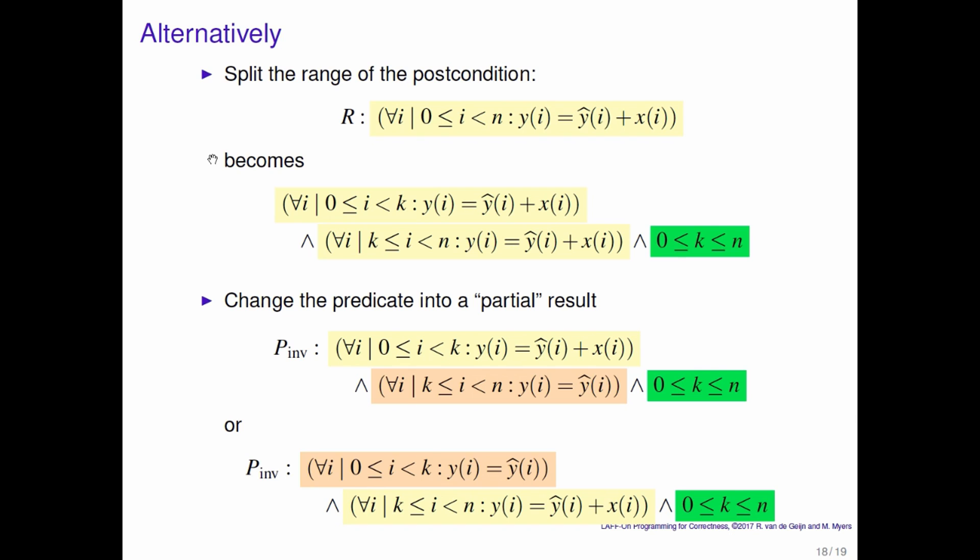So what do we see here? You look at the postcondition, which tells you everything that needs to be computed. You split its range because from experience we know that we tend to march through one-dimensional arrays in a systematic manner. And you then look at those two quantifiers that pop out. And then you say modify them so that they represent a partial result towards the final result. And bingo, what you have is a loop invariant.